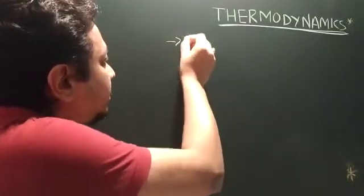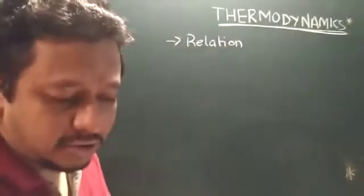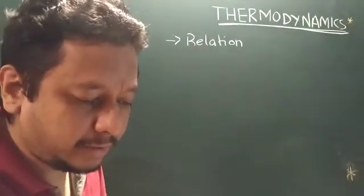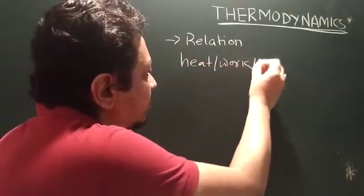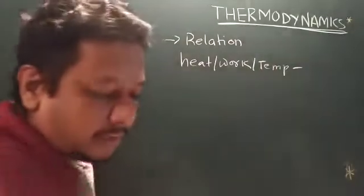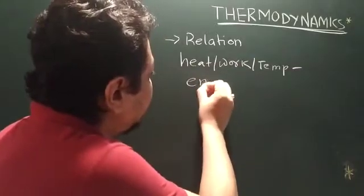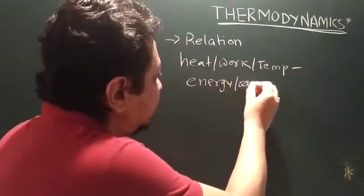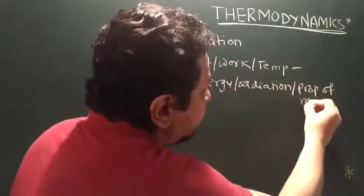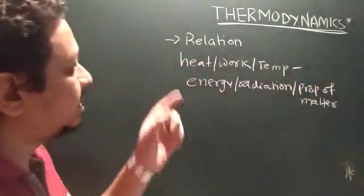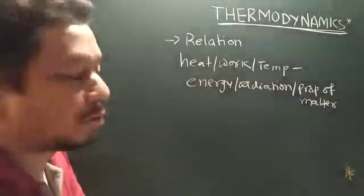The first important word is 'relation.' Thermodynamics is a branch of science that deals with the relation between heat, work, temperature, energy, radiation, and properties of matter. The word 'thermo' means thermal, so this relation is all about thermodynamics.